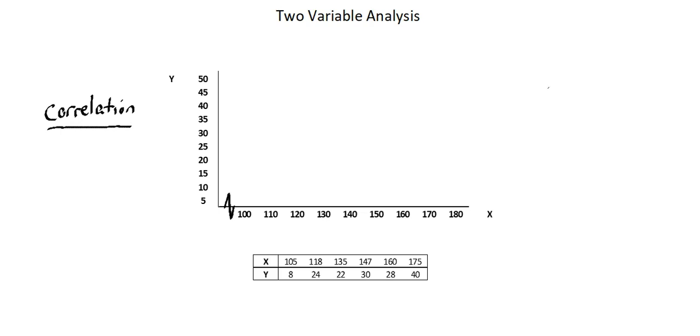So let's plot our points. Our first data point has an x value of 105 and a y value of 8, then x 118, y 24, then x 135, y 22, x 147, y 30, x 160, y 28, and finally x 175 and y 40. So we've plotted our six data points.